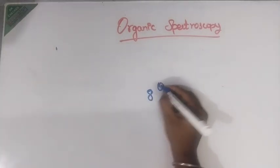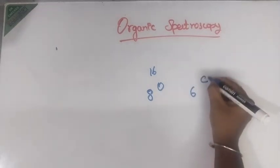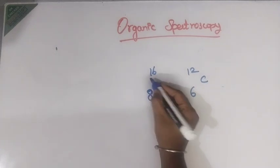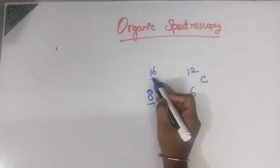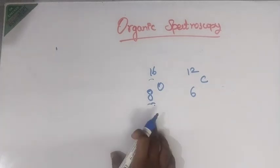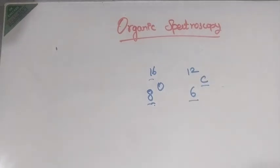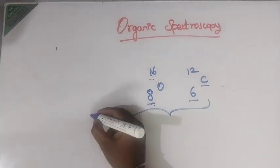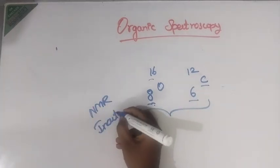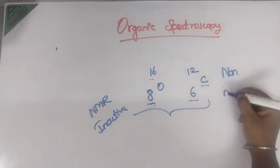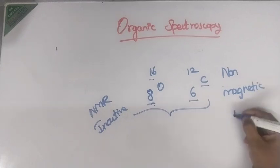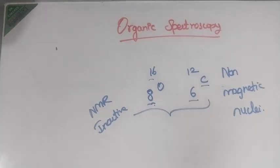For non-magnetic nuclei, I will give you a simple example. See oxygen: atomic number 8, mass number 16. Similarly, carbon: atomic number 6, mass number 12. Here, the atomic number is even and mass number is also even. Hence, these species are NMR inactive — non-magnetic nuclei. Whenever both atomic and mass numbers are even, the species will have I value equal to 0.